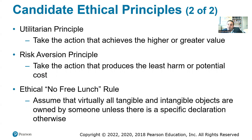The Utilitarian Principle is when you take an action that achieves the higher or greater value. One example is replacing assembly line workers with robots — this increases company production and also improves employee safety, since many accidents occur when tools or machines fall on workers. By replacing humans with robots in assembly lines, you improve safety for people.